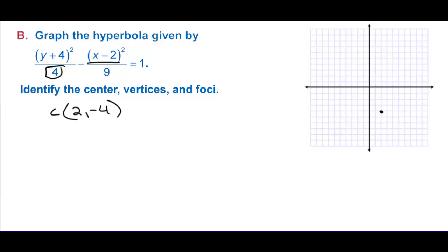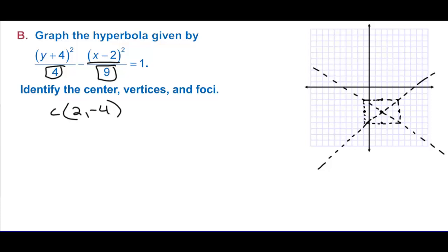We go up and down two from the center, and right and left three units. We draw the rectangle and get the corners so we can draw the asymptotes. Since y is first, this is a vertical hyperbola going up and down, which means the top and bottom points are the vertices.